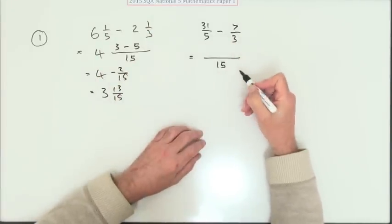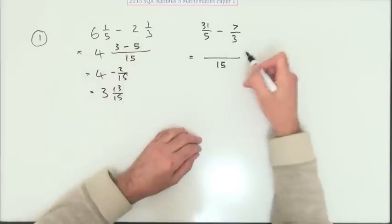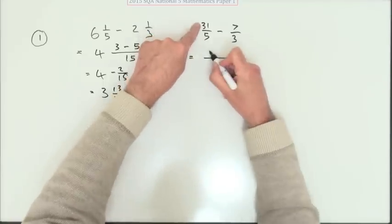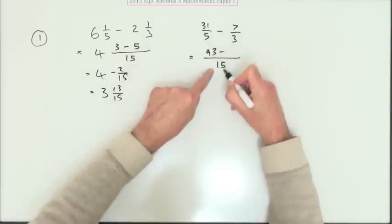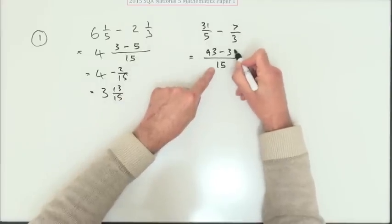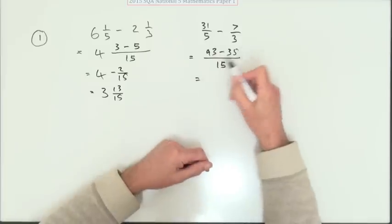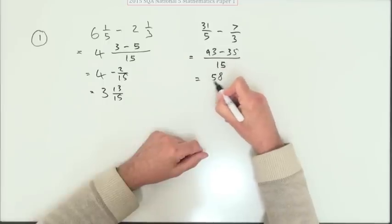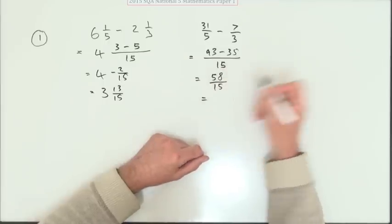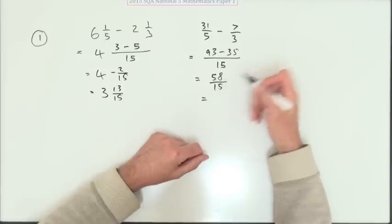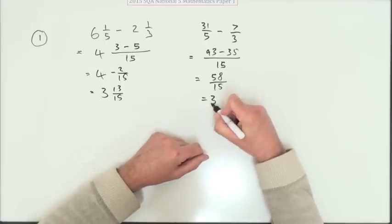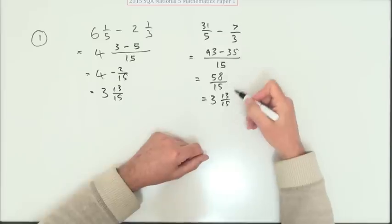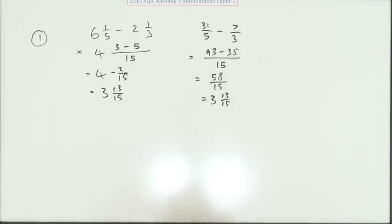Make them both into fifteenths. So I'll just put the one big line instead of keeping them separate. But now I'm going to have to say that goes three times. Three times that's ninety-three. Five times that's thirty-five. Now I've got to work out ninety-three take away thirty-five. Well it's fifty-eight over fifteen. And now I've got to figure out how many fifteens there are in fifty-eight. Well it is three and there's thirteen left over. Didn't encounter any negatives that way but there's an awful lot more arithmetic.